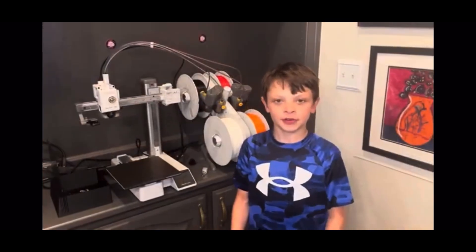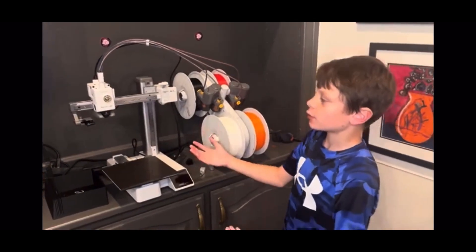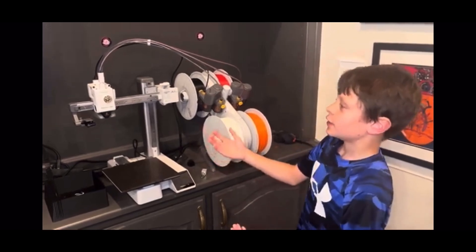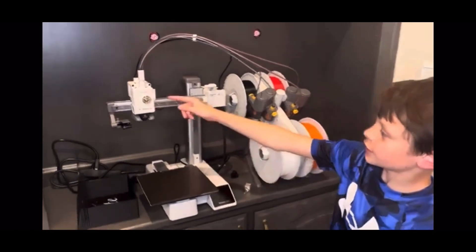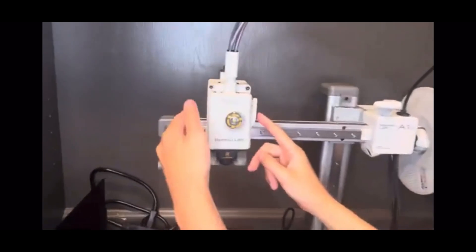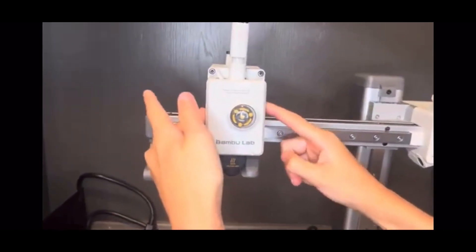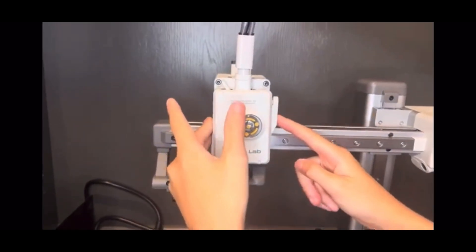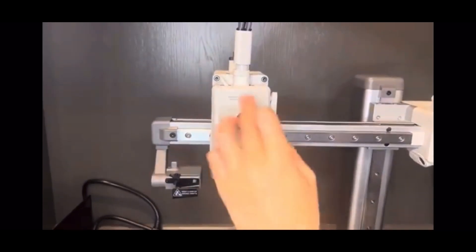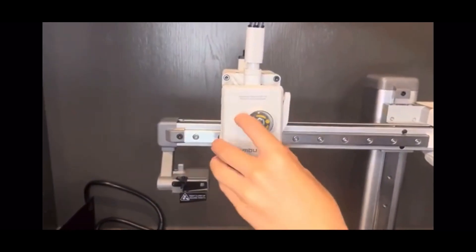First, make sure that your printer is off and has rested for a while so that the nozzle is not hot. Next, you're going to see this little button. You're going to push this in so you feel no pressure, and that cuts the filament so you don't rip the filament out. Next, there's a cover right here. You can just wiggle and pop that off.